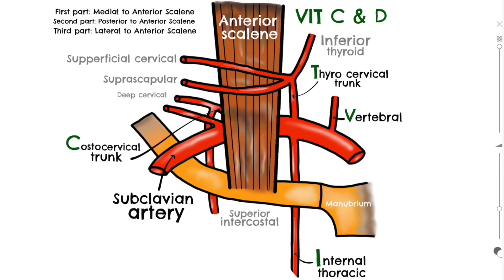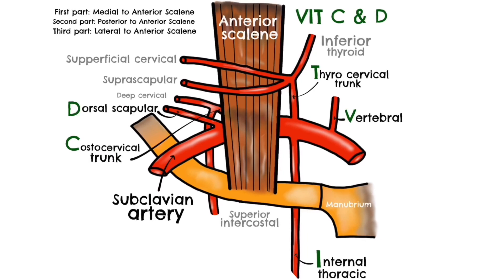Finally, the last branch of the subclavian artery is the dorsal scapular artery. This stems from the third part of the subclavian and passes laterally to supply the muscles of the neck and upper back — specifically levator scapulae, the rhomboids, and trapezius.